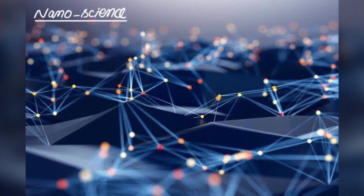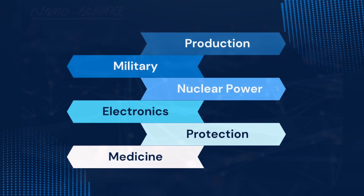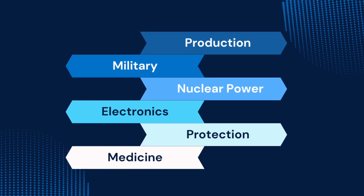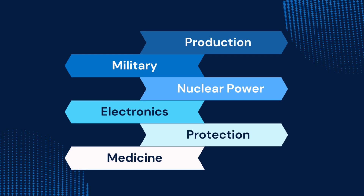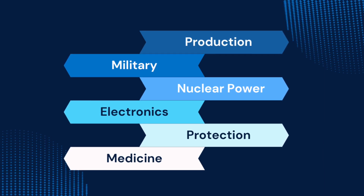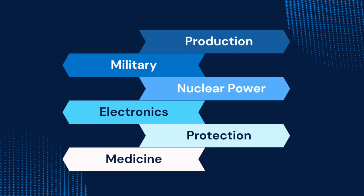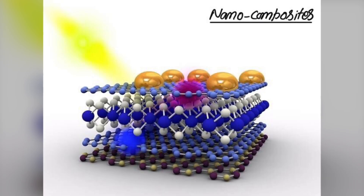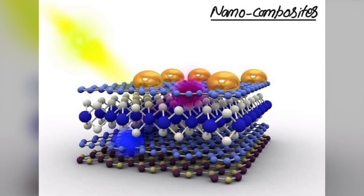Today nanomaterials have been used in such areas as production technologies, military engineering, nuclear power engineering, electronic equipment, protection of materials surfaces, medicine and biotechnology. It is important and prospective now to use nanomaterials in composites as components of various functions.